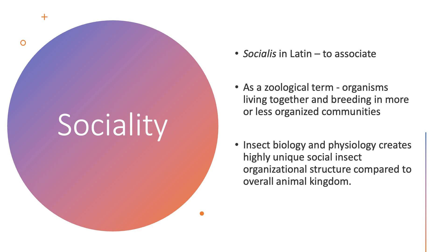I'm going to talk about one of my favorite topics: sociality, and explain it through the lens of entomology. Sociality comes from the Latin 'socialis,' which literally means to associate. It's a zoological term referring to organisms living together and breeding in an organized community. In insect biology and physiology, we see some unique social organizational structures.